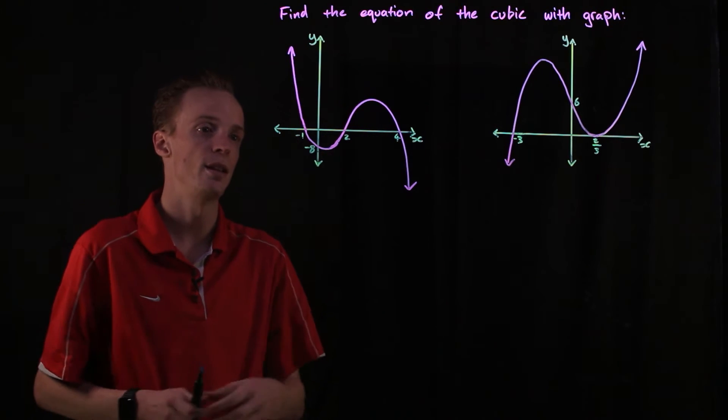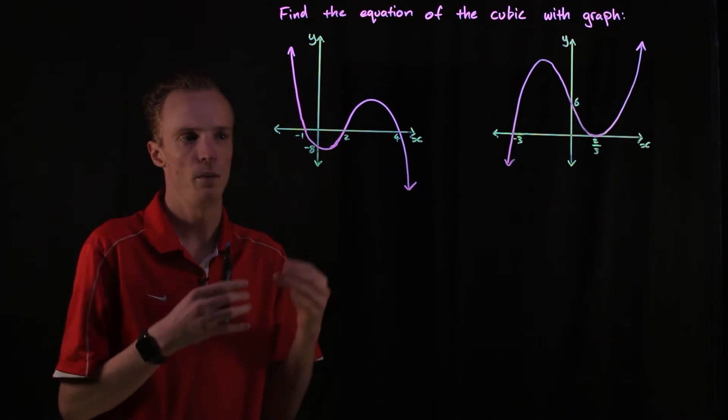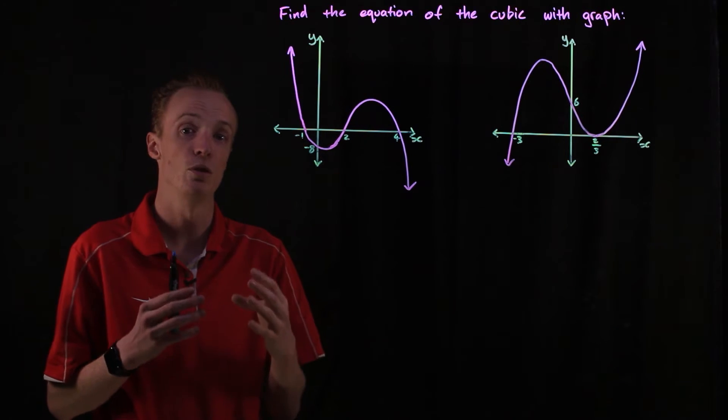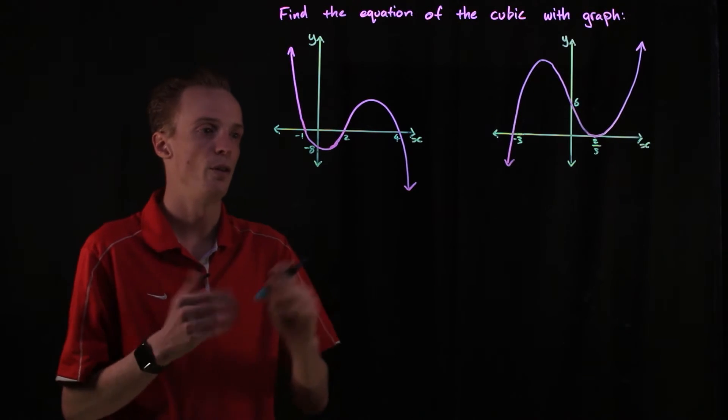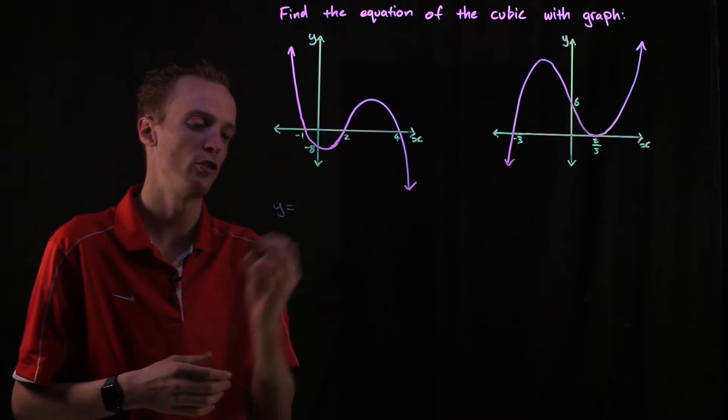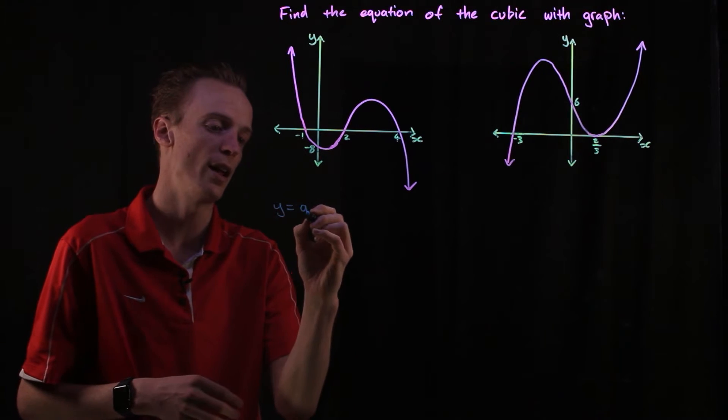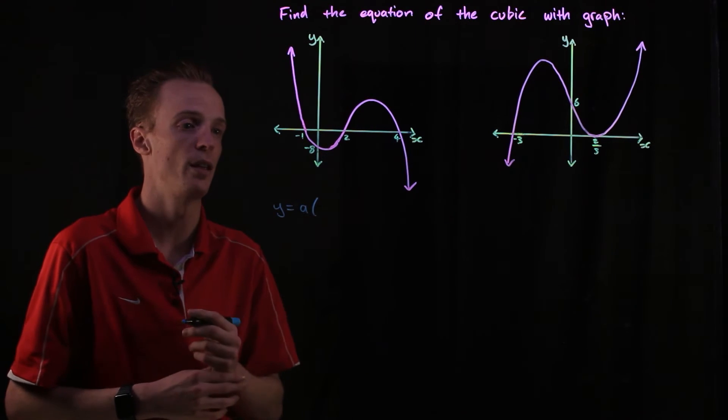In this one here you can see that with our roots it cuts through every single time. So when we're using these roots, we know that we've got linear factors. We can put our function into the notation of a times the three linear factors that we've got here.